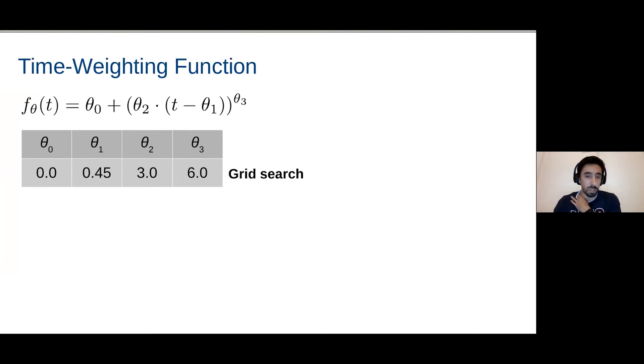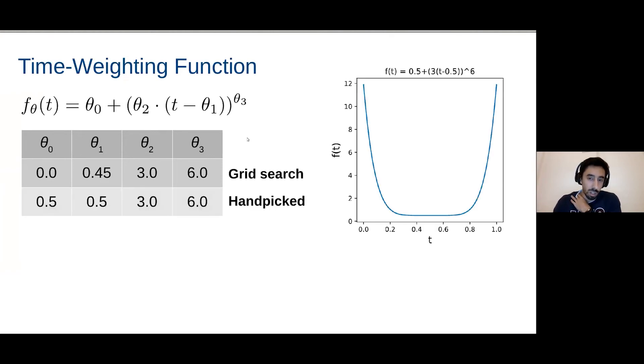So we maximize the AUC of the preferential attachment method while grid searching these parameters. And these were the values that we found. Ultimately, these were not the values that we used in the end, because we did also try some handpicked variations. And in the end, the values that worked the best. Here is just a plot of the function that comes out with these handpicked set of parameters.